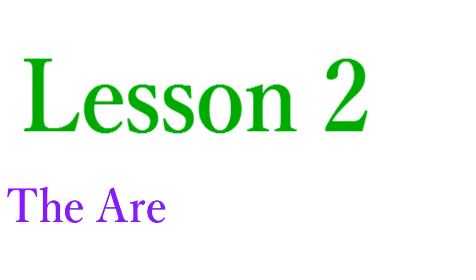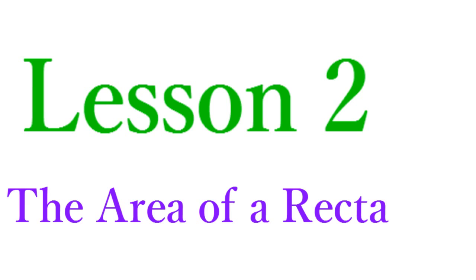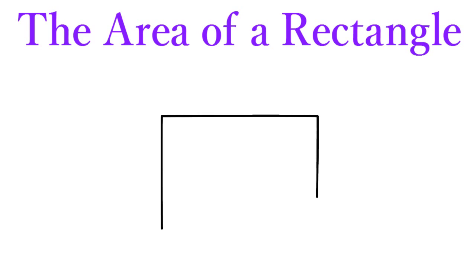Lesson 2: The Area of a Rectangle. Another common shape in geometry is the rectangle. Like a square, a rectangle is a four-sided shape with four corners that are right angles — that is, corners that measure 90 degrees.